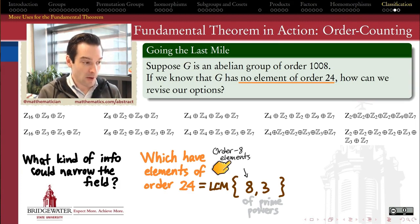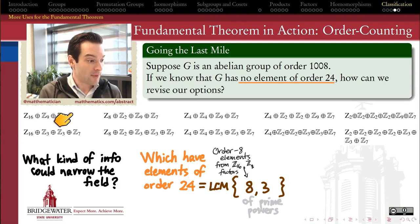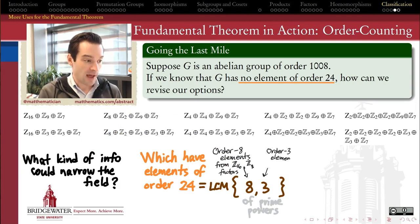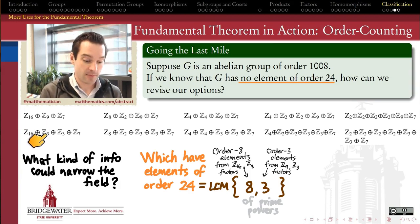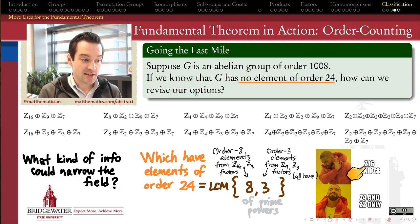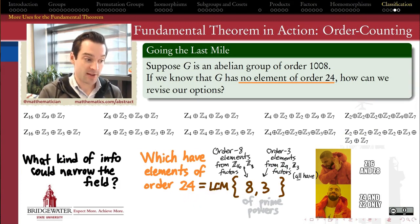My elements of order 8 are only going to come from 2 possible places: the cyclic groups of order 16 — since 8 is a divisor of 16 and this is a cyclic factor — or the generators of my Z8 factors, which are also elements of order 8. Meanwhile, my elements of order 3 are going to come either from my cyclic groups of order 9 — because 3 is a divisor of 9 — or from the generators of one of my Z3 factors. So all my options that have a Z16 or a Z8 as one of the factors are definitely going to have an element of order 24, because they'll have an element of order 8, and all these options have an element of order 3, and LCM(8, 3) = 24.